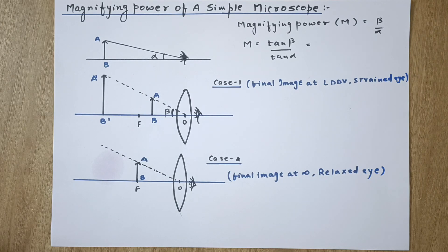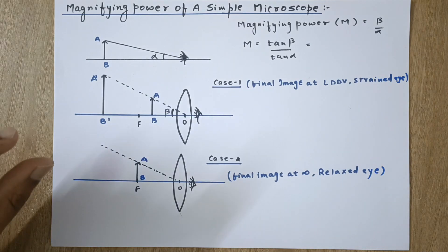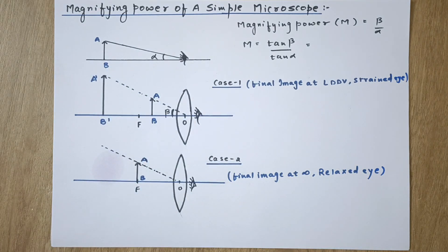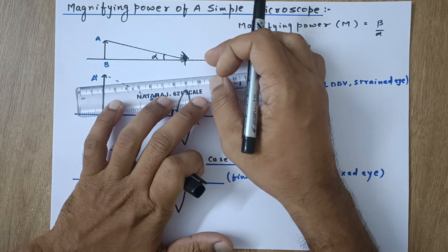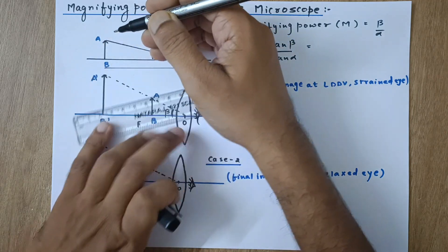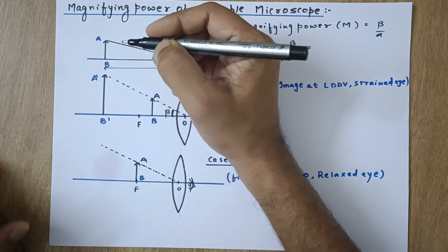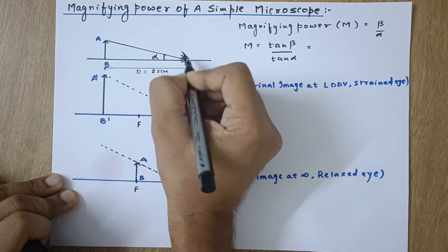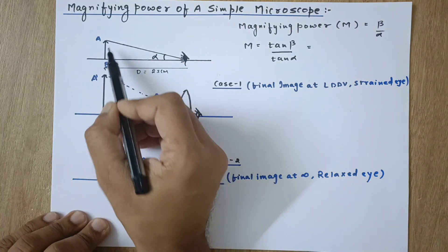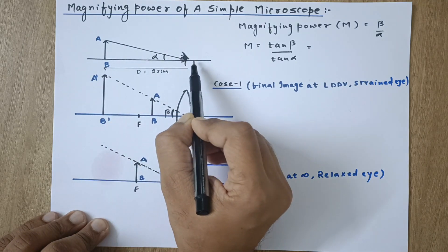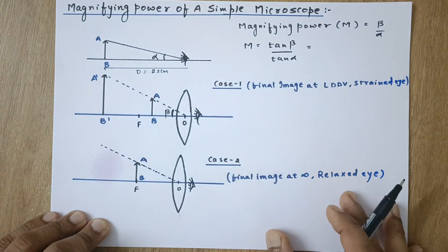Now, what do we mean by magnifying power? For magnifying power, first consider a very small tiny object kept in front of the eye at a distance equal to the least distance of distinct vision. This distance from the eye is d, that is 25 centimeters, and the head of the object makes a certain angle alpha with respect to the horizontal.